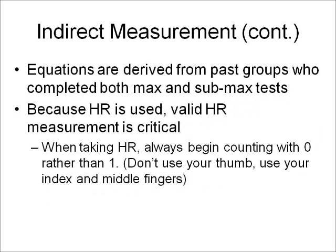Continuing indirect measurement: equations are derived from past groups who completed both max and sub-max tests. Because heart rate is used, valid heart rate measurement is critical. When taking heart rate, always begin counting with zero rather than one. And obviously, don't use your thumb — use your index and middle fingers.